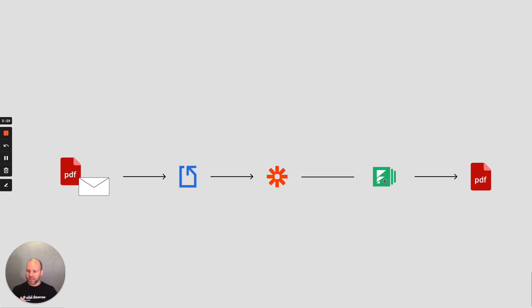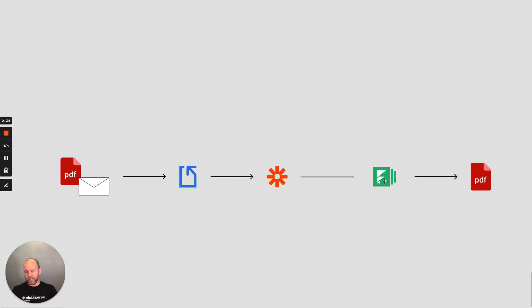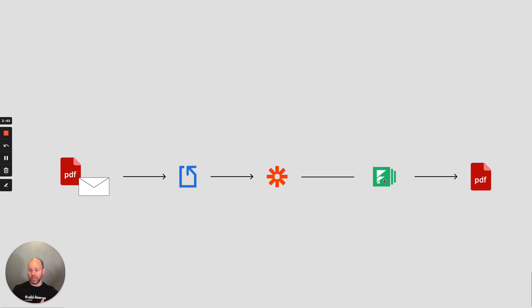Once it's in Formstack Documents, it's going to take that data and put it right into — in this case we're actually going to use an Excel file — but then that Excel file is going to be saved off as a PDF. And then we could email that PDF.